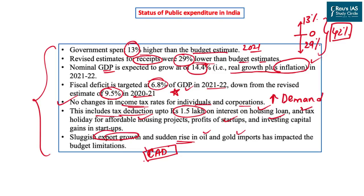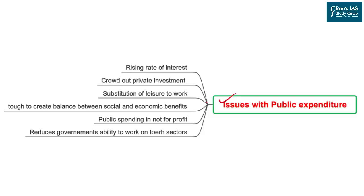Now, what are the issues with public expenditure? Can the government spend an infinite amount of money? The answer is no. When the government spends too much money in the economy, the rate of interest rises — because the money comes from borrowing, and higher borrowings mean paying higher interest rates. Higher interest rates will automatically crowd out or remove private investment from the country, as private investors are not interested in borrowing at high interest rates.